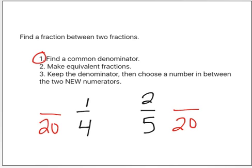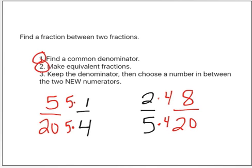Now I need to think. Five times what is twenty? Five times four. So I'm going to also take two times four and get eight. On the other side, four times five is twenty, so I'm going to take one times five and I get five. I just made equivalent fractions.